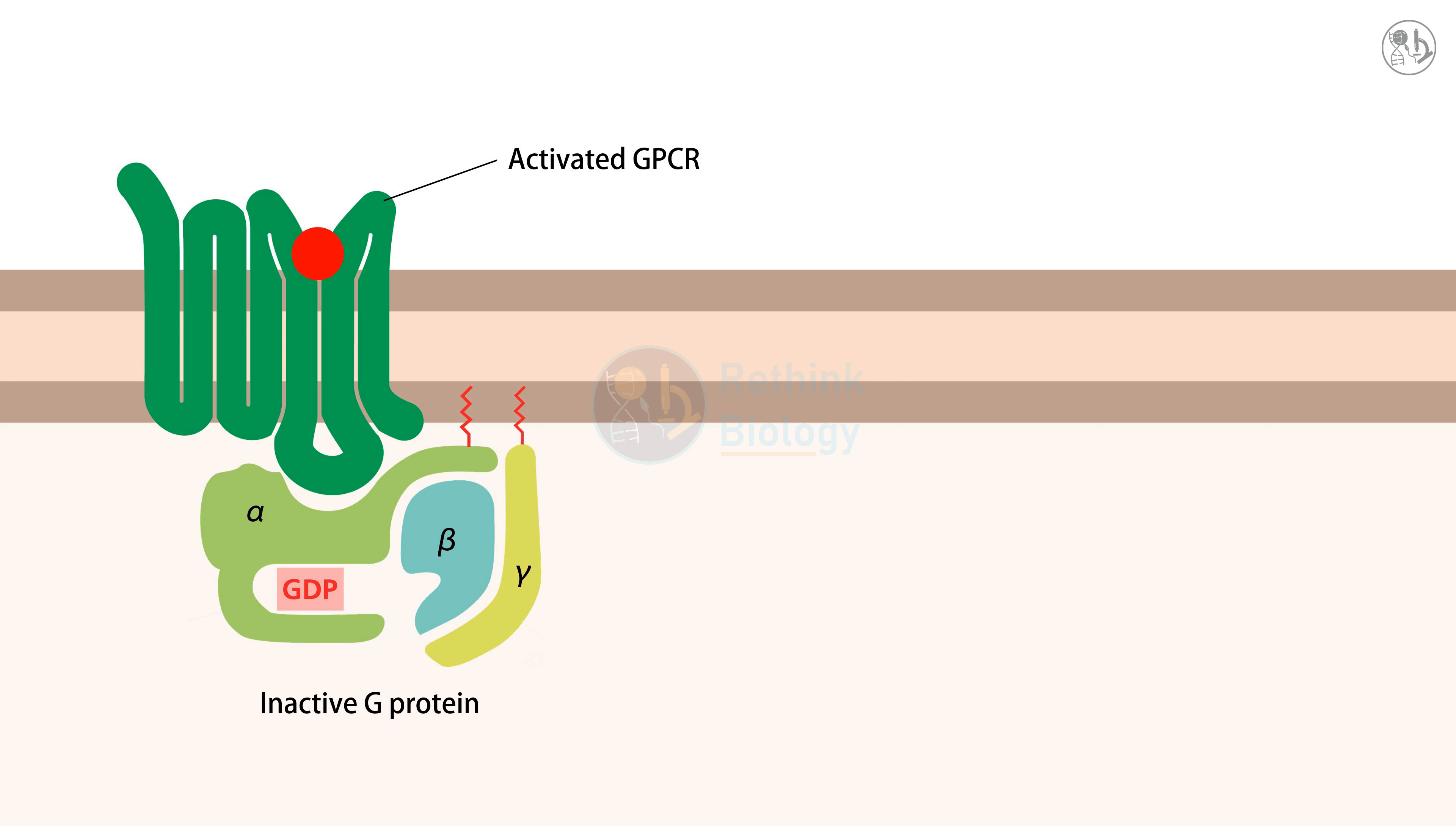Both the alpha and gamma subunits have lipid molecules attached to them which help them to anchor to the membrane.